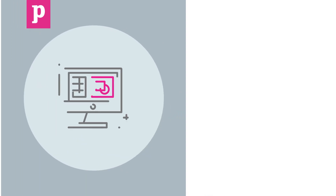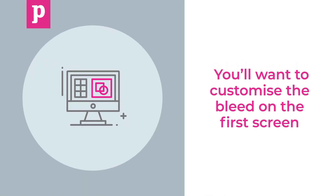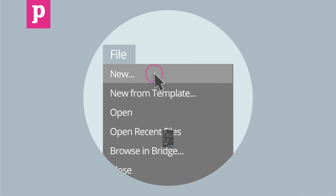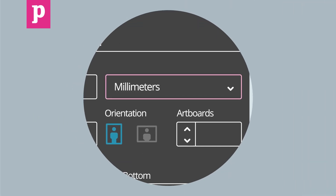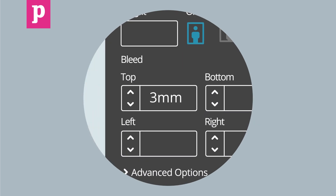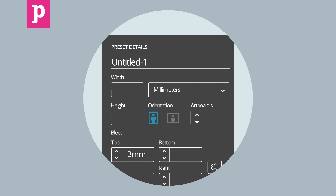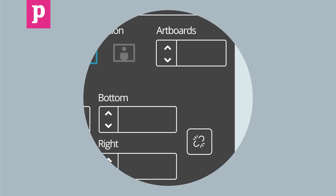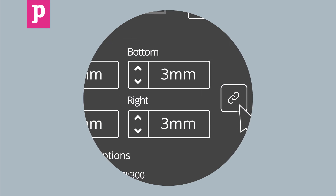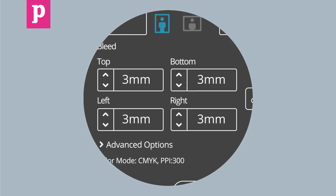If you're making a new document, you'll want to customise the bleed on the first screen. Click File, New, make sure your units are set to millimetres and type 3mm in the first bleed box. At Print2.com, we use 3mm of bleed in all our printed documents. Make sure this chain is clipped as it puts equal values in all the boxes.